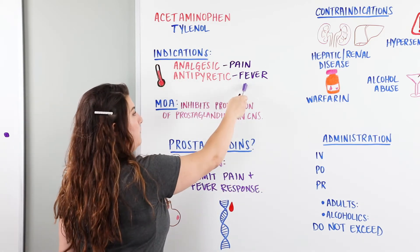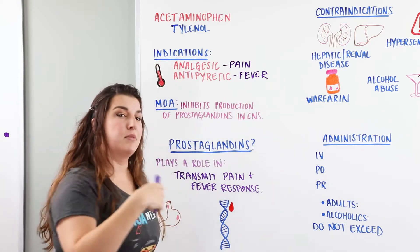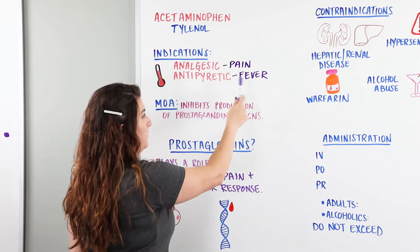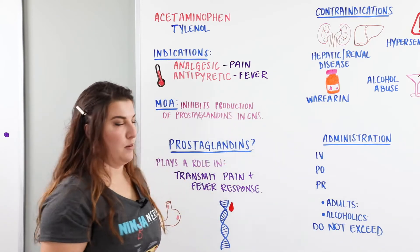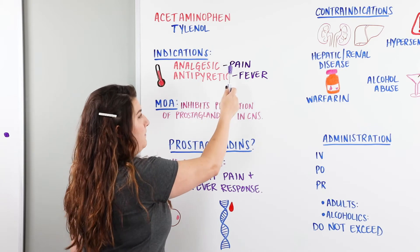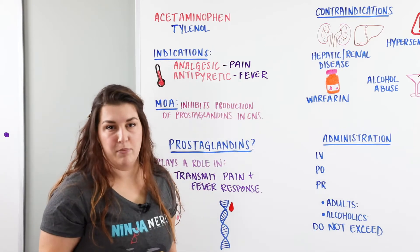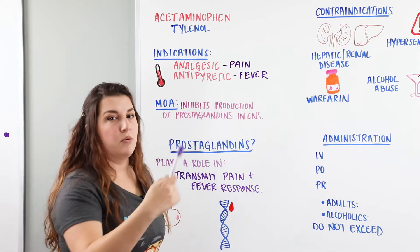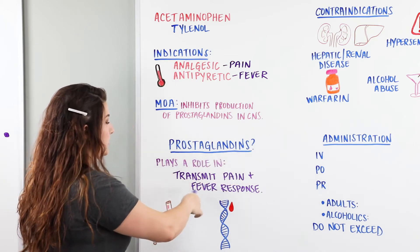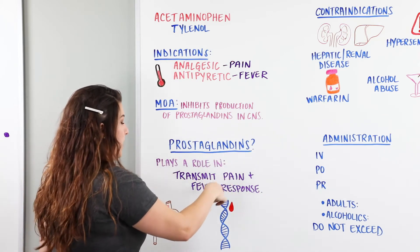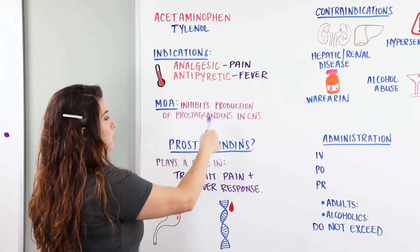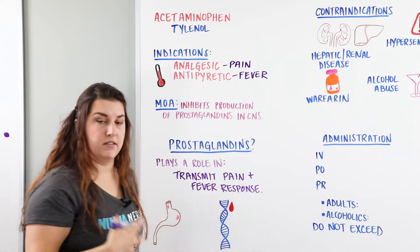We treat the source of the pain or the fever in some other way. If the person has a fever because of an infection, they would get secondary antibiotics. If they're having pain from something else, maybe having their appendix removed, we're going to help with that as well. Prostaglandins transmit the pain and fever response, so inhibiting that will cut off this response.